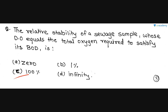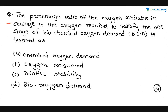The correct option for that question is option C. The next question is: 'The percentage ratio of the oxygen available in sewage to the oxygen required to satisfy the first stage of biochemical oxygen demand is termed as?' — it is termed as relative stability, so option C is the correct answer. In this way, any question asked on relative stability for BOD can be solved using the relative stability formula.